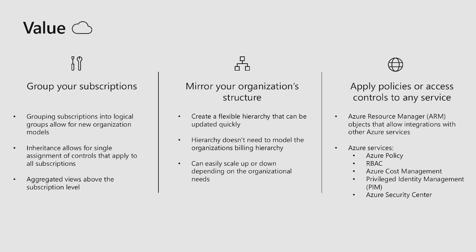If you think about a hierarchy, there's a top node. Applying a role access onto that top node gives you the ability to see all subscriptions across your organization. As we talk about mirroring your organizational structure, this gives you the ability to create a very flexible hierarchy that can be quickly moved around based on your needs.